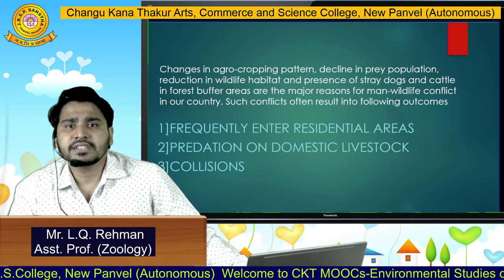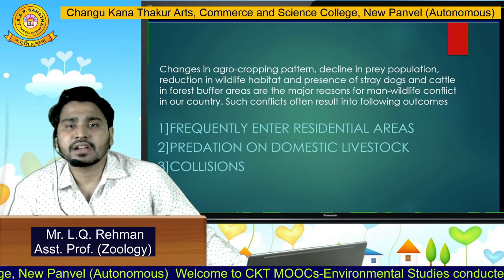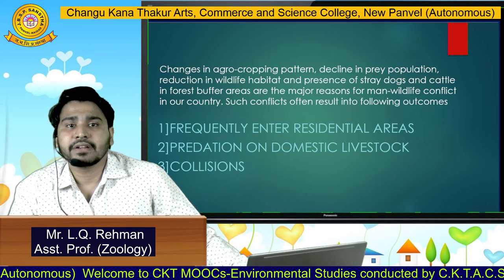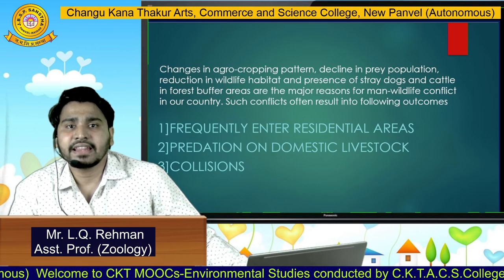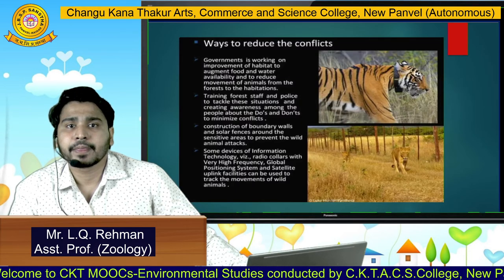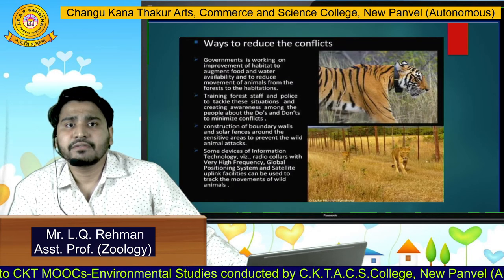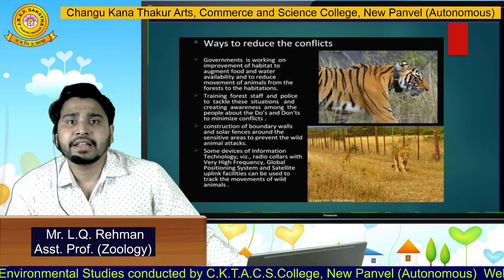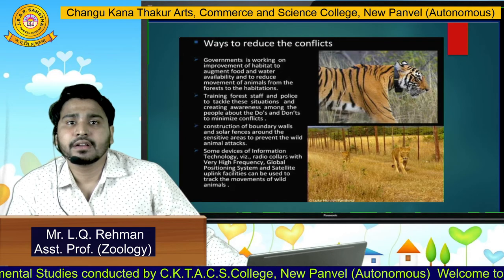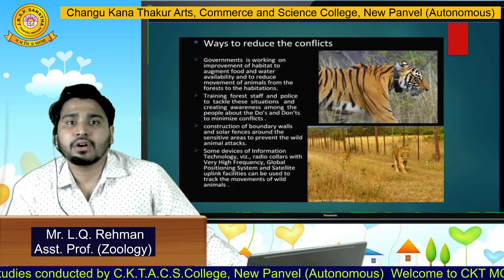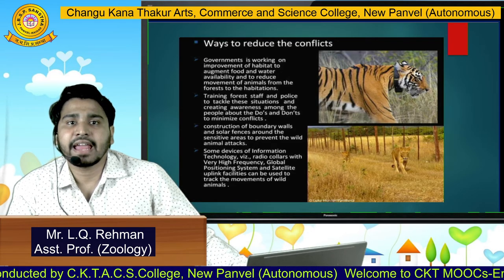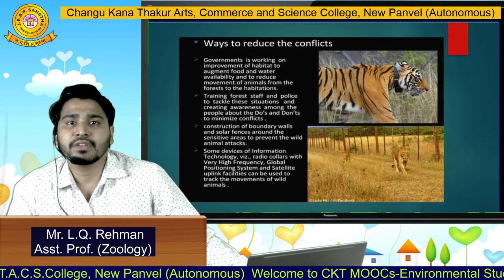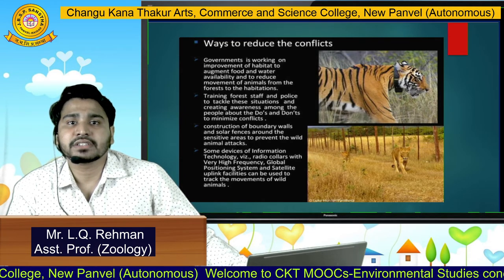Another outcome is collision or accidents which occur on roads due to car accidents between cars and wild animals. The government is working on improvement of habitat to augment food and water availability and to reduce the movement of animals from forest to human habitations.